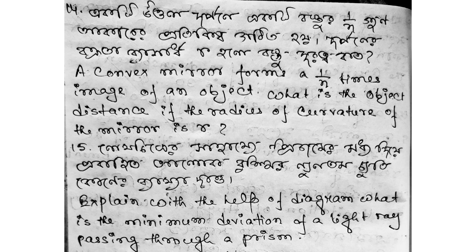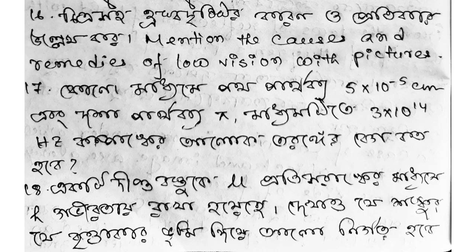A convex mirror forms a 1/n times image of an object. What is the object distance if the radius of curvature of the mirror is r? The next question is: what is the minimum deviation of a light ray passing through a prism? Also: what are the causes and remedies of low vision, with pictures?